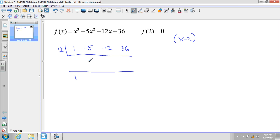2 times 1 is 2. I add these two together, I get -3. 2 times -3 is -6, add them together, I'm going to get -18. 2 times -18 is -36.